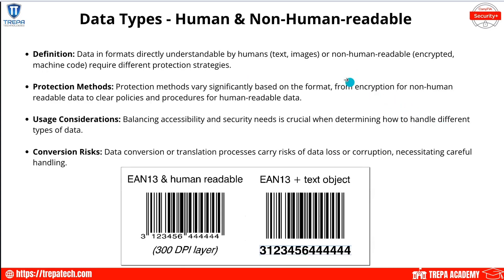Data formats can be human-readable, like text and images, or non-human readable, like encrypted data or machine code, and they require different protection strategies. For non-human readable data, we want to encrypt it — converting plaintext to ciphertext. For physical documents, we may need clean desk policies, burn policies, and shredding policies.